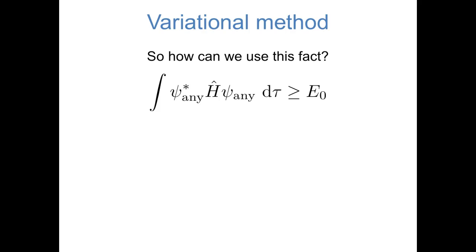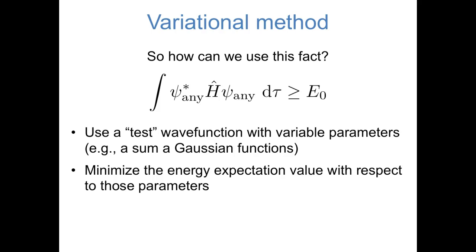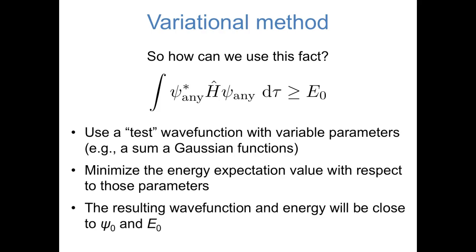The variational principle is summarized by the equation on this slide: the energy expectation value of any arbitrary wave function is greater than or equal to E0. So how can we use this to approximate the energy of a multi-electron system? This gives us a systematic way to look at wave functions to get closer and closer to the ground state wave function and ground state energy. We start with some test wave function that has variable parameters — it can be a sum of atomic orbitals, or often a sum of Gaussian functions. We vary the coefficients of that test wave function to make our energy as low as possible. Because of the variational principle, the lower the energy gets, the closer we are to the true ground state. Variational methods are used very often in computational chemistry, and we'll play around with a numerical example in class.